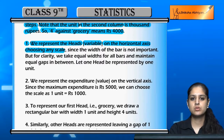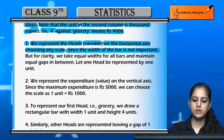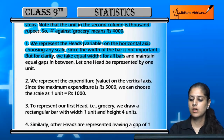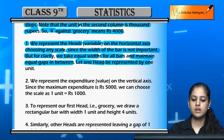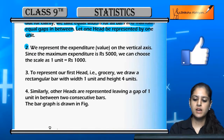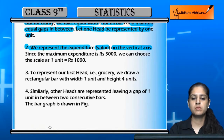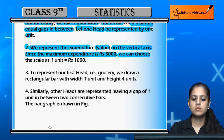We choose a scale and we choose a width. The width of the bar is not the most important factor, but for clarity we will take equal widths for all the bars and equal gaps between them. We represent each head on the same unit, and we take the expenditure values on the vertical axis.